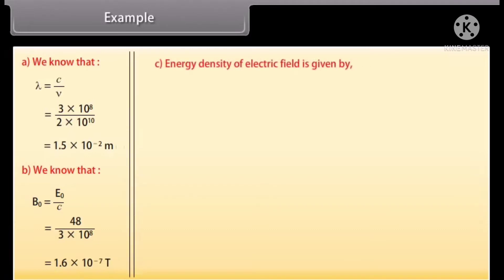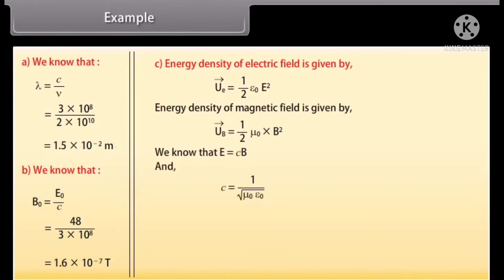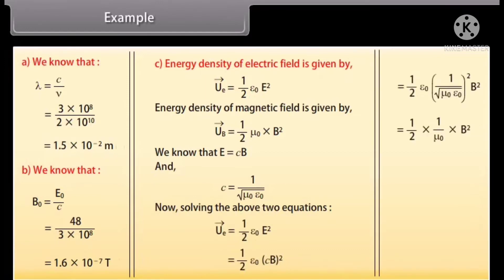Energy density of electric field is given by half epsilon_0 E square. Energy density of magnetic field is given by half mu_0 B square. We know that E is equal to CB and C is equal to 1 upon under root mu_0 epsilon_0. On solving the above two equations, we get average energy density of electric field equals the average energy density of magnetic field.